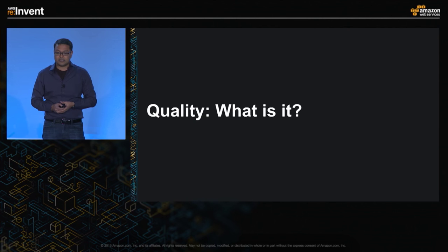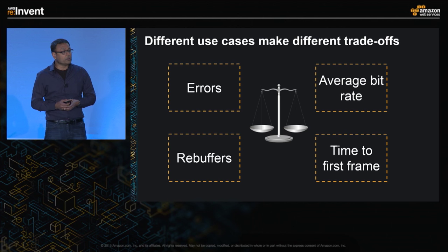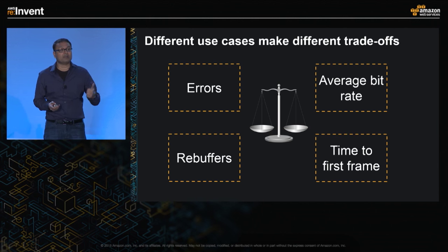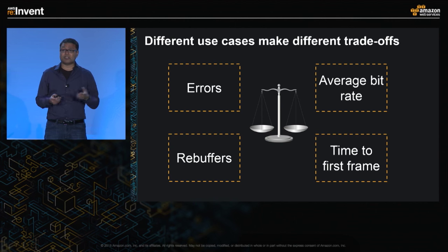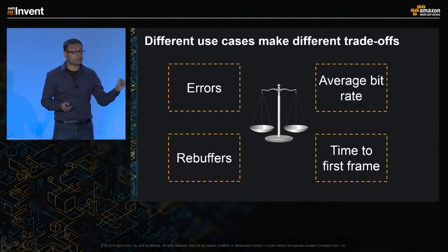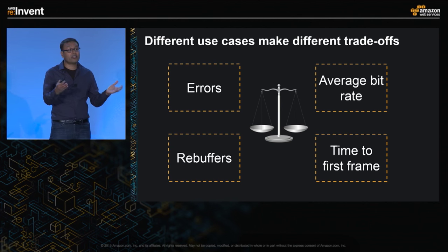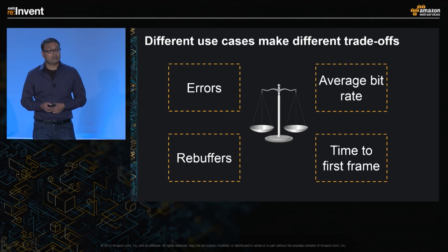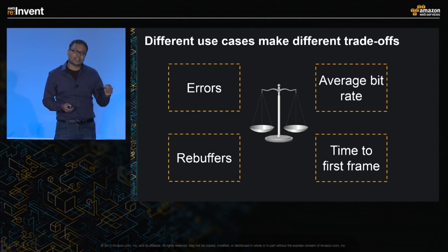So what does quality really mean and how do you measure it? There are primarily four metrics. Number one is errors — do you get an HTTP 200 back to your viewer? Number two, the number of rebuffer sessions they see as they are streaming content. Three is the average bit rate used for streaming. And four, the time to first frame. Depending on your specific use case, these metrics might have different value propositions — for example, if you're looking at 4K connected device delivery, average bit rate is probably a lot more important than time to first frame. It's also important that these metrics are captured at fairly detailed levels: per player, per device, per network, and so on.